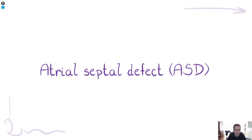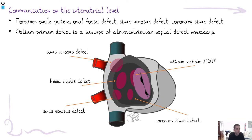Now let's talk about specific malformations, starting with the simpler ones — the holes in the heart. ASD, or atrial septal defect, is a communication between the left and right atrium. It usually behaves like a left-to-right shunt because there is normally higher pressure in the left atrium. We have several subtypes of ASD.